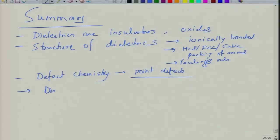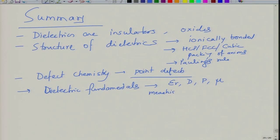Then we looked at dielectric fundamentals — quantities such as dielectric constant, dielectric displacement, polarization, and dipole moment. We looked at mechanisms of polarization: electronic polarization, ionic polarization, dipolar polarization, and interfacial polarization. These occur at various frequencies from higher to lower corresponding to smaller to bigger entities. Electronic and ionic polarization are depicted by resonance at certain frequencies, while dipolar and interfacial polarization show relaxation mechanisms.